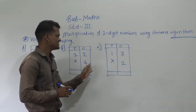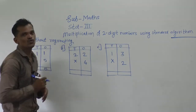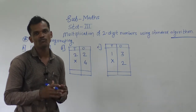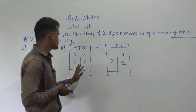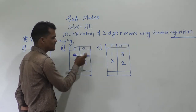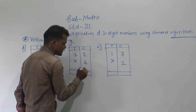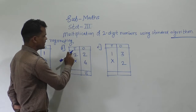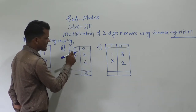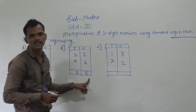Next example: these examples are very simple. These examples are without regrouping, meaning there is no need for carry forward. See here: first 22 multiplied by 4. First multiply the ones place digit by 4. 4 twos are 8. Write that 8 in the ones place column, and then 4 twos are 8 in the tens place. So, 88 comes as the product.